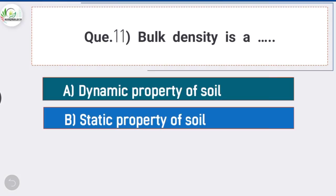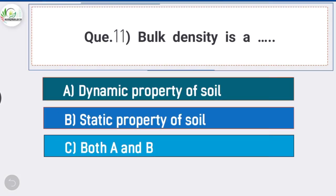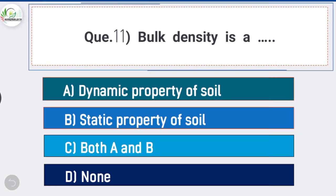Question number eleven: bulk density is — answer is option A, a dynamic property of soil. Bulk density is a dynamic property of soil, and bulk density decreases with the addition of organic matter.